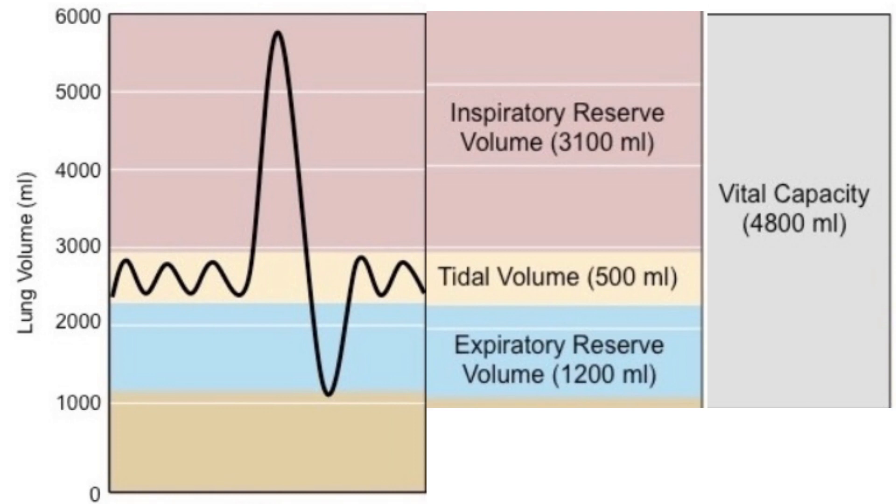Second, Vital Capacity, VC. VC represents the maximum amount of air we can forcibly exhale after taking a deep breath. It's the sum of TV, IRV, and ERV. Ideally, it should be around 80% of TLC, which is about 4,800 milliliters.